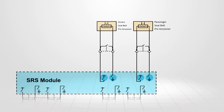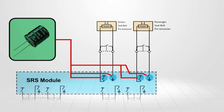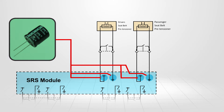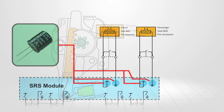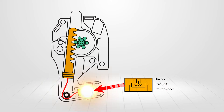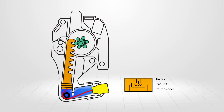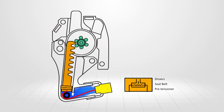When the SRS control module detects a collision event worthy of pretensioner deployment, current from storage capacitors within the module discharge through the high and low side drivers to the pretensioner circuit and squib. This current detonates the squib charge, beginning the chemical reaction within the gas generator. The expanding gas is used to move a plunger within a fixed length cylinder.